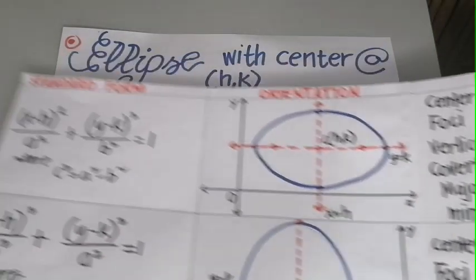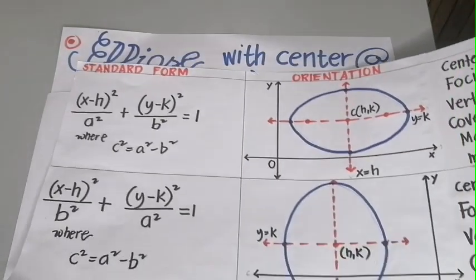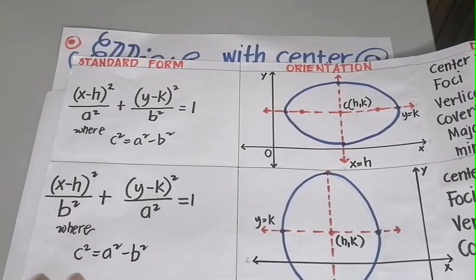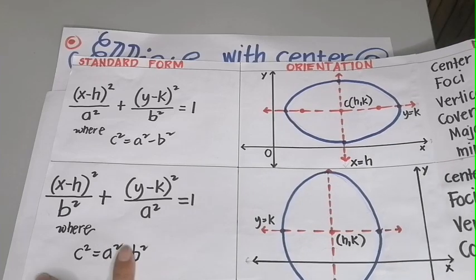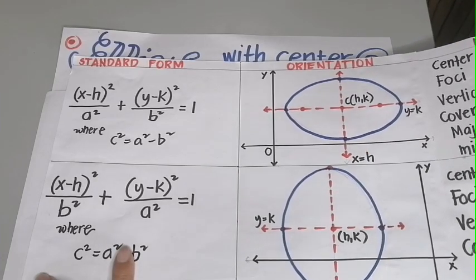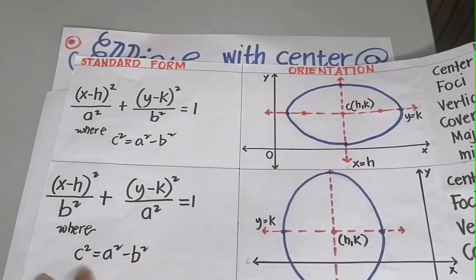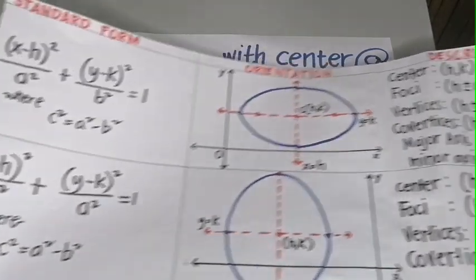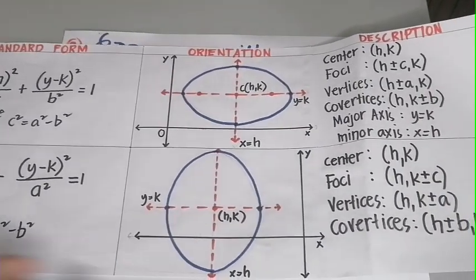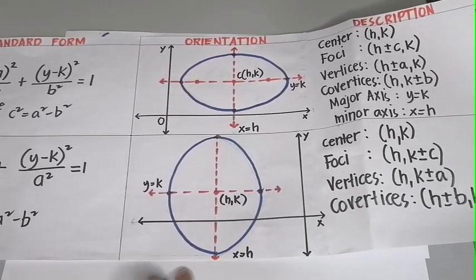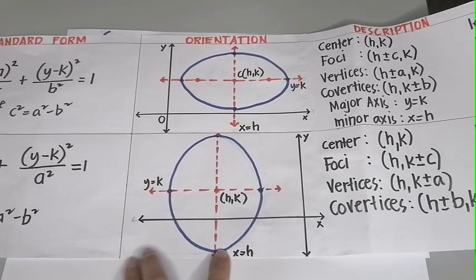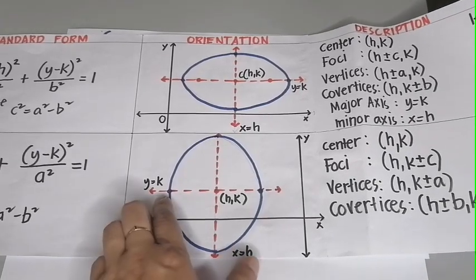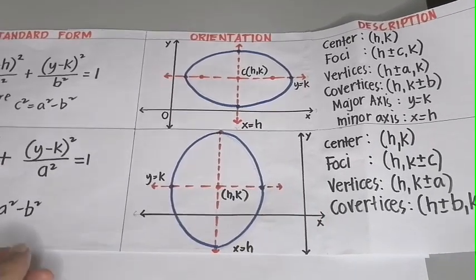For the second standard form: x minus h quantity squared all over b squared plus y minus k quantity squared all over a squared equals 1, where c squared equals a squared minus b squared. Its orientation shows that the major axis is vertical and the minor axis is horizontal.